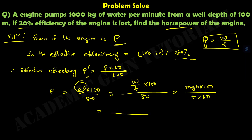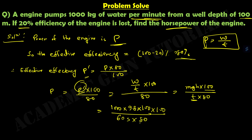We use the formula MGH into 100 divided by T into 80. We know M equals 1000 kg, G equals 9.8, H equals 100 meters, and time equals 1 minute, which is 60 seconds. Calculating this whole expression, we get the value 2041.67 watts.